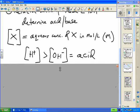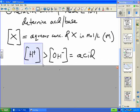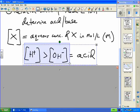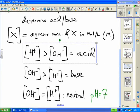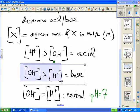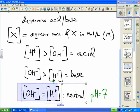So, in a situation where the aqueous concentration of the hydrogen ion is greater than the hydroxide ion, then you have an acid. Similarly, if the aqueous concentration of the hydroxide ion is greater than hydrogen ion, you've got a base. If they are equal, then you have a situation where you have a neutral pH of 7.